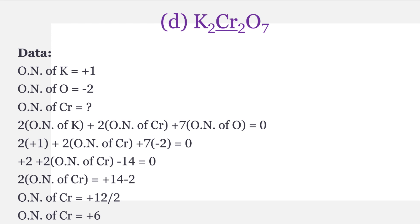Now part D: potassium dichromate K2Cr2O7. Is mein chromium ka oxidation number find out karna hai. Data: oxidation number of potassium is plus one, oxidation number of oxygen is minus two, and oxidation number of chromium humne find out karna hai. Formula — jis tarah se chemical formula hai usi form mein: two multiplied by oxidation number of potassium plus two multiplied by oxidation number of chromium plus seven multiplied by oxidation number of oxygen equals zero. Values put ki — potassium ki bhi aur oxygen ki bhi. Calculation mein two multiplied by oxidation number of chromium ke saath plus 14 minus 2 aa gaya, jo plus 12 deta hai. 2 doosri side pe divide hoga aur oxidation number of chromium is equal to plus six.